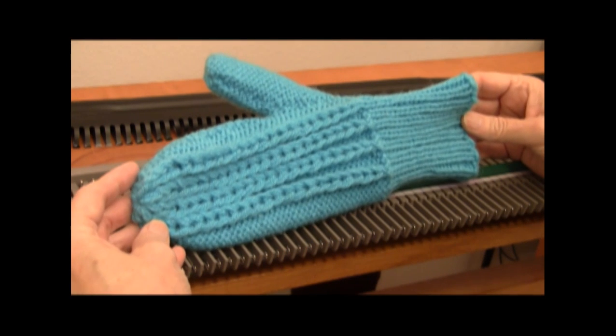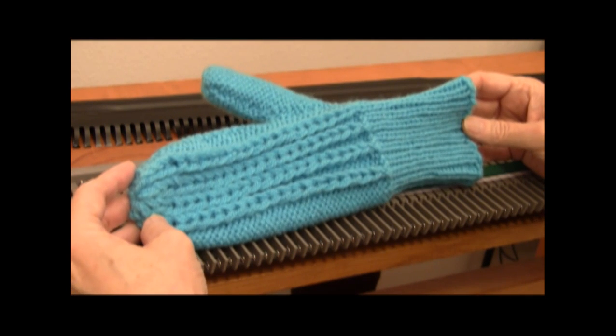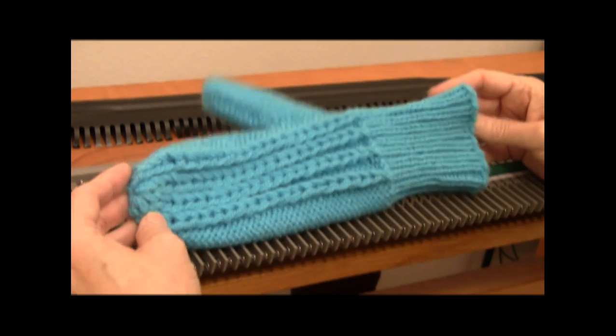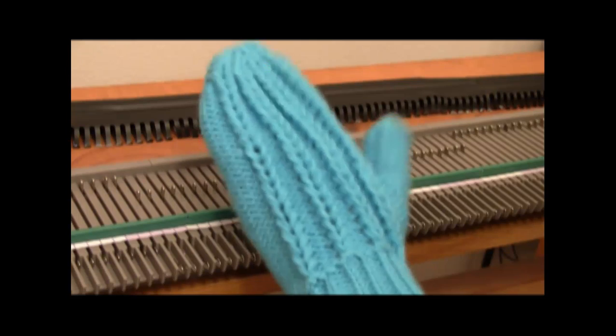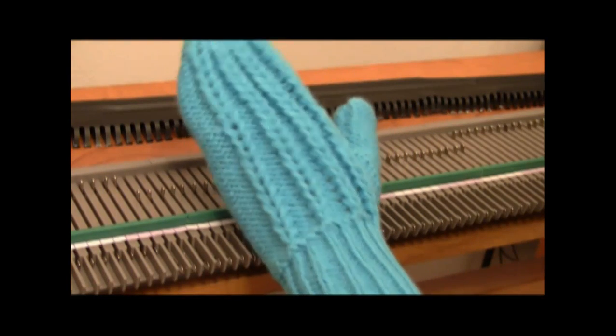This is Diana Sullivan in Austin, Texas. Today I'm going to show how to knit a mitten on the Ultimate Sweater Machine. You're going to need some worsted weight yarn, and this is a woman-sized mitten.